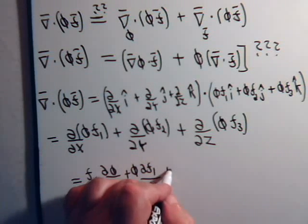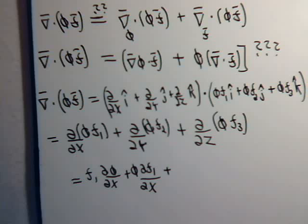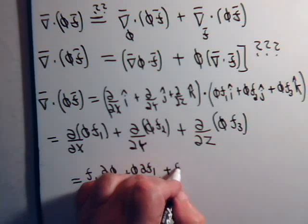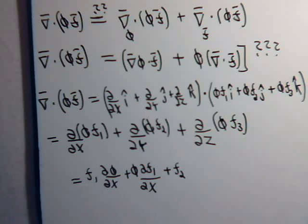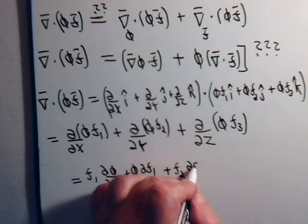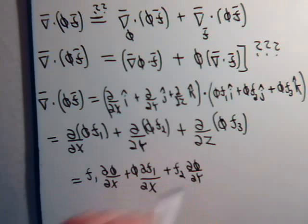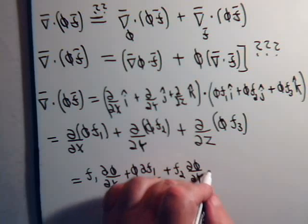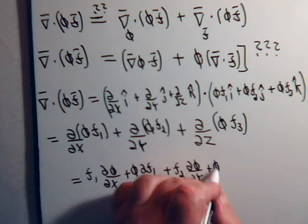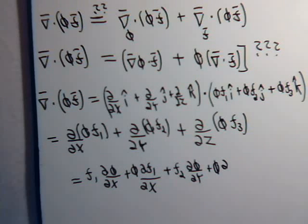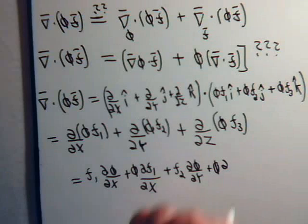Now from this term we're going to have plus f2 times the partial of phi with respect to y plus phi times the partial of f2 with respect to y.